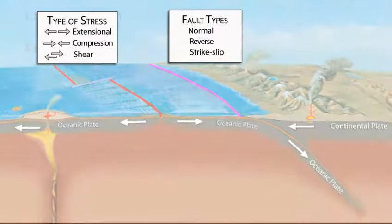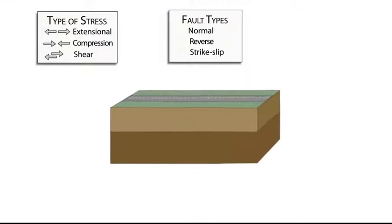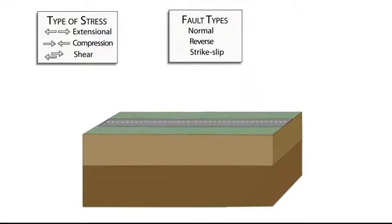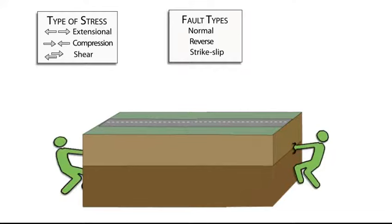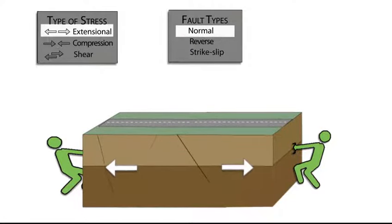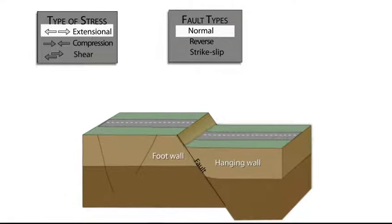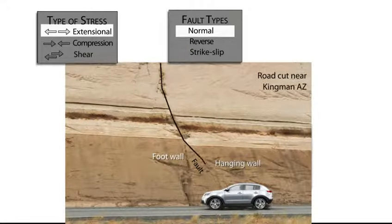Faults can be separated into three broad classes based on the direction of the stress that caused the fault offset. When extensional stress is applied, the rocks extend, initially forming fractures usually at an angle of less than 70 degrees to the surface. When the hanging wall drops relative to the foot wall, it is called a normal fault.